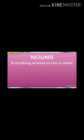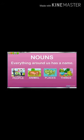Everything around us has a name. When you look at your surroundings there are so many things and they have names — such as people, animals, places and things. You can see in the picture that a name of a person, an animal, a place and a thing is called a noun, which means naming words.